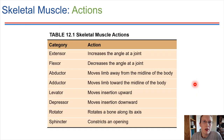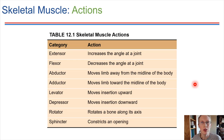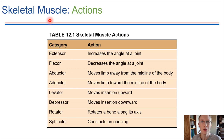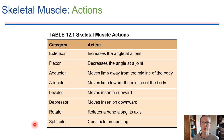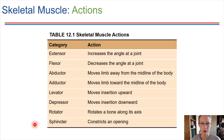Different types of skeletal muscle actions are possible depending on what type of joint is involved and what sort of muscle attachments exist around that joint. Different types of movements have different names, and these are very important in medical fields for talking about finding problems, identifying difficulty points, or addressing different issues in various situations.